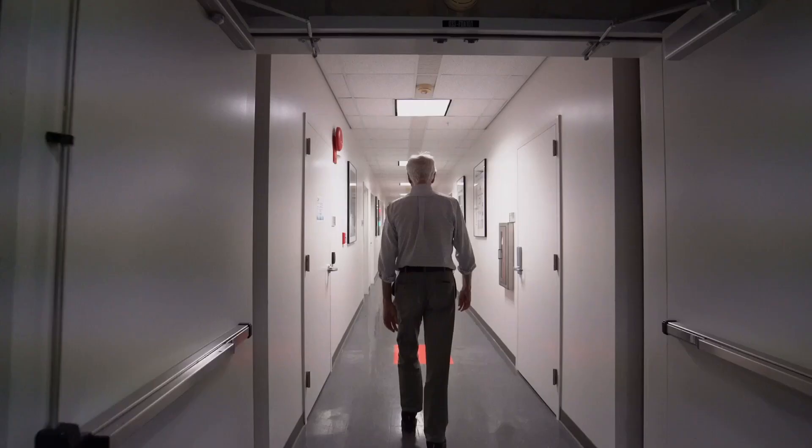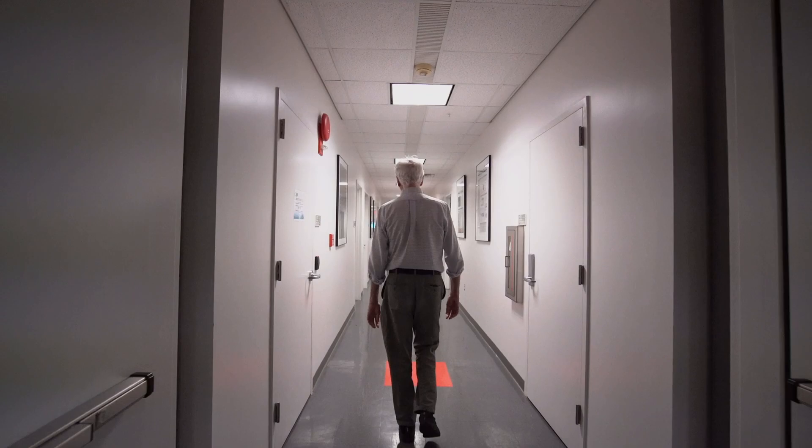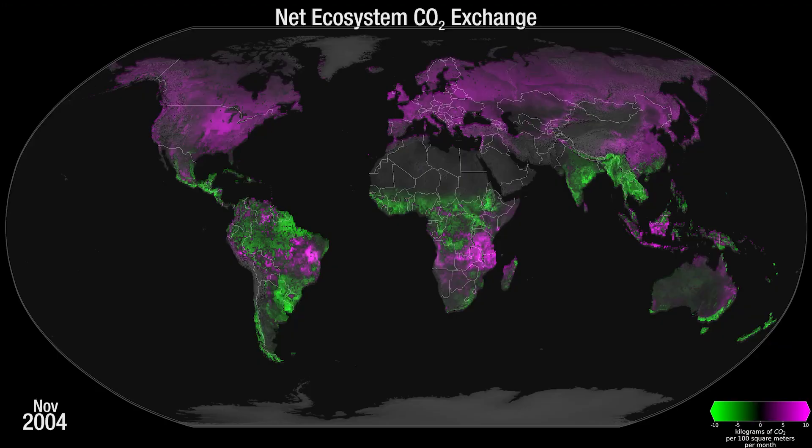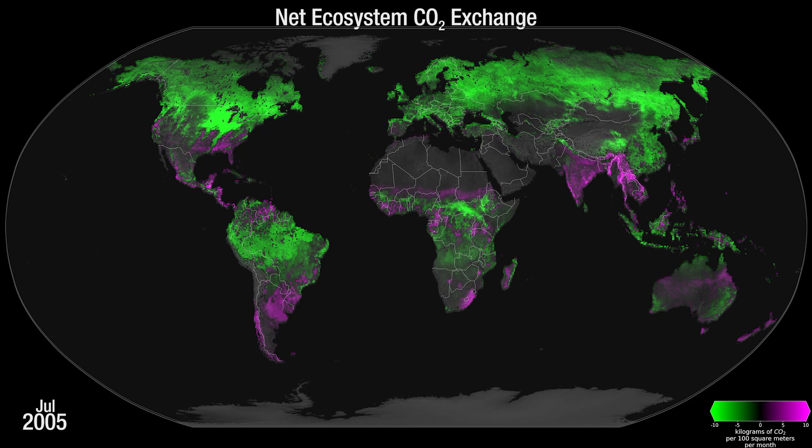My name is Compton James Tucker and I am a scientist at the Goddard Space Flight Center. We're very interested to improve our knowledge of the carbon cycle globally — where is carbon going in vegetation and how long does it persist?